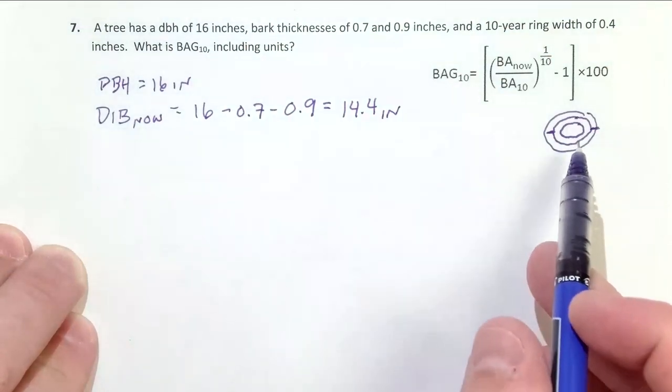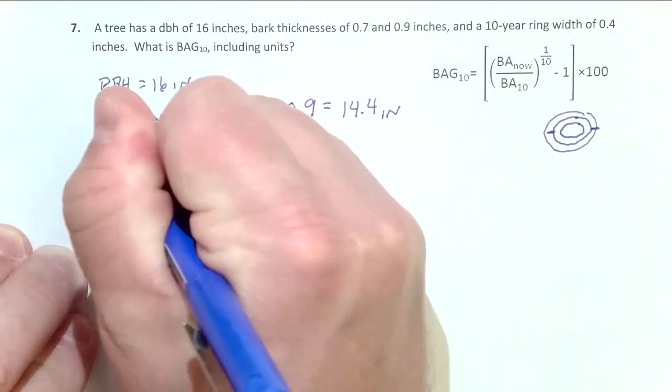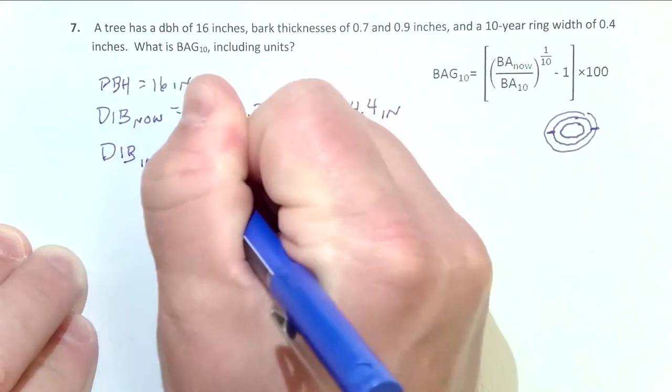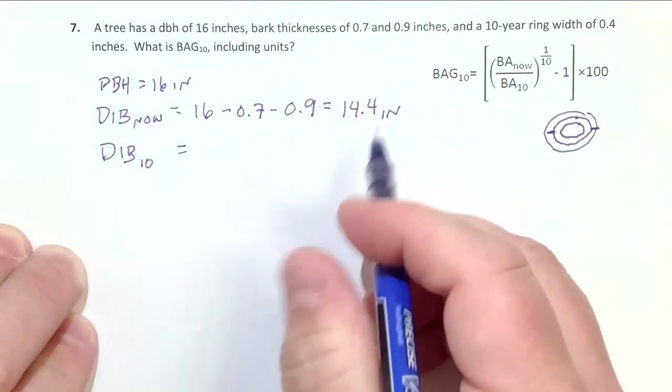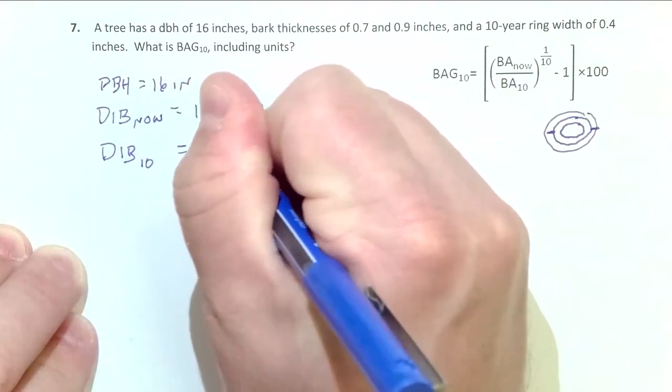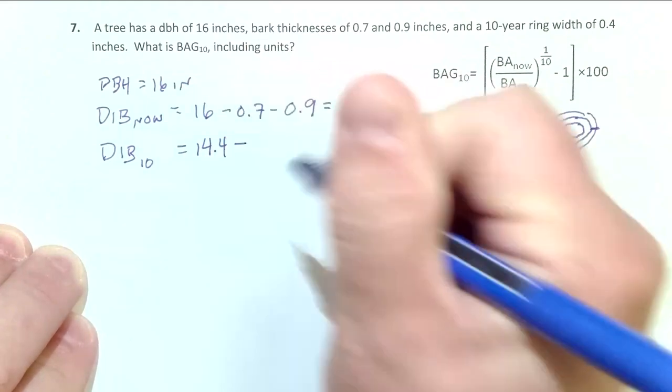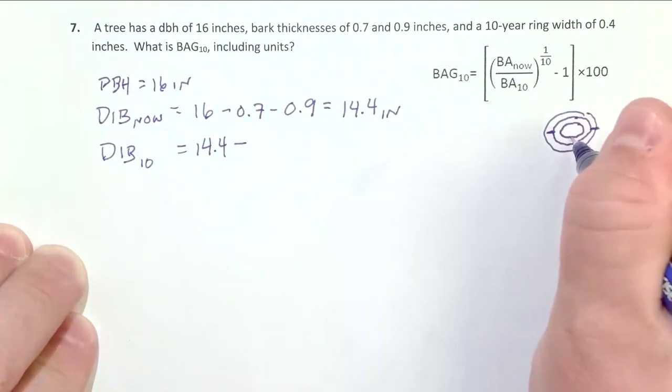Okay, now we want diameter inside the bark 10 years ago. So that's going to equal diameter inside the bark now, 14.4, minus we basically need to take that ring width here, but we need to double it to account for removing it on the other side right there.